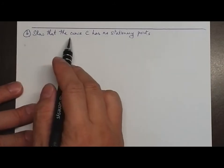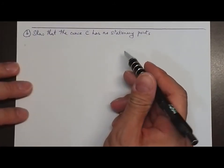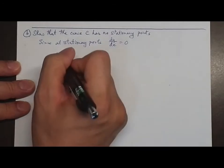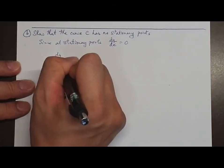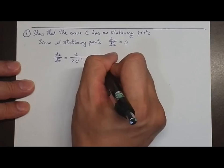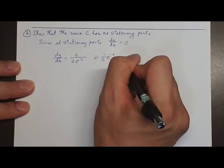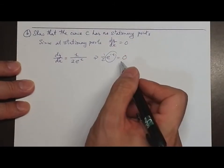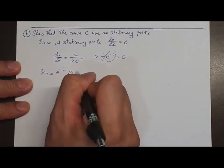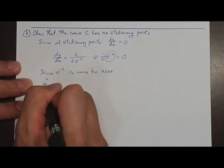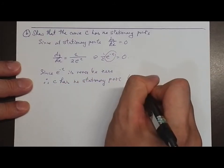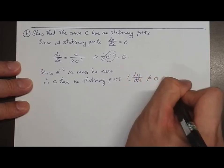Question 4b: Show that the curve C has no stationary point. A stationary point requires dy/dx equals 0. We know that dy/dx of the curve is 1 over 2e^t, which can be written as (1/2)e^(−t). Since e^(−t) is never equal to 0, therefore C has no stationary point because dy/dx is never equal to 0.